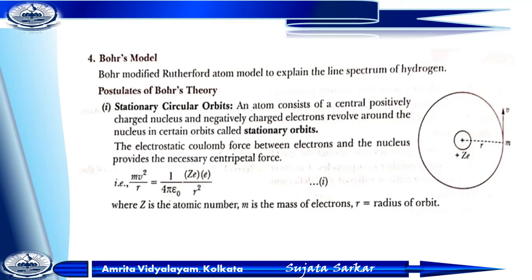Bohr modified Rutherford's model and explained the line spectrum of hydrogen. Bohr's postulates: an atom consists of a positively charged nucleus and negatively charged electrons revolving around the nucleus in certain orbits called stationary orbits. The electrostatic Coulomb's force between the electrons and the nucleus provides the necessary centripetal force: mv²/r = (1/4πε₀) × (Ze²/r²), where Z is the atomic number, m is the mass of the electron, and r is the radius of the orbit.